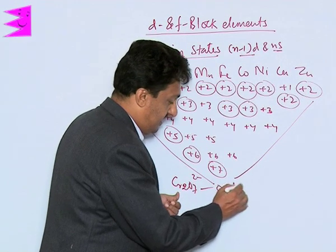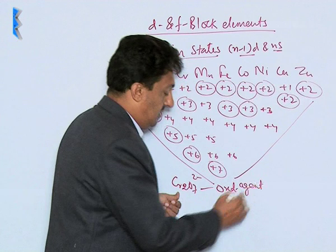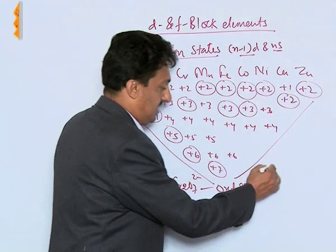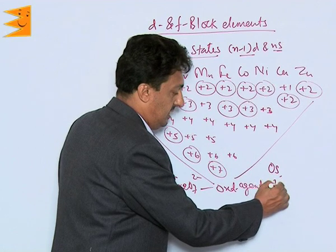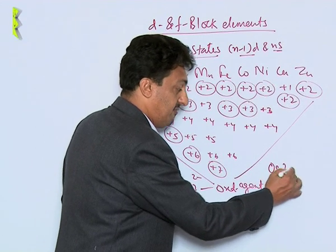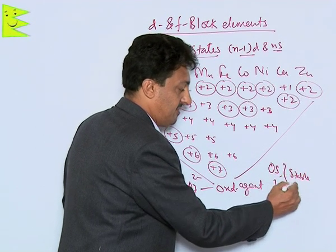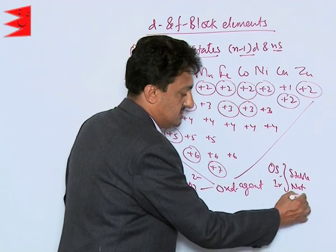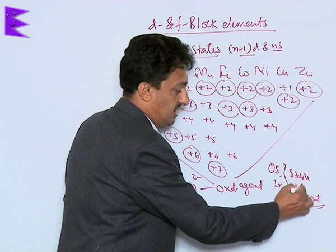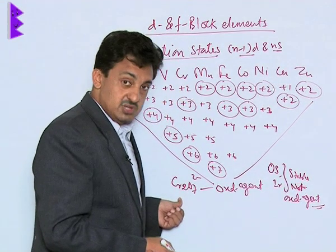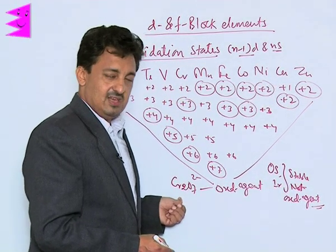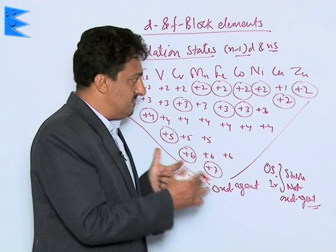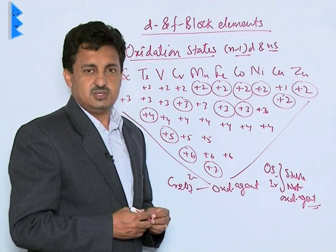For example, Cr₂O₇²⁻ in its highest oxidation state acts as an oxidizing agent. However, when we look at lower period elements like osmium or iridium, they are very stable in their higher oxidation states and are not oxidizing agents in those states — which confirms their stability at higher oxidation states. The same behavior is noted with manganese. These are the key trends we observe in the oxidation states of d-block elements.